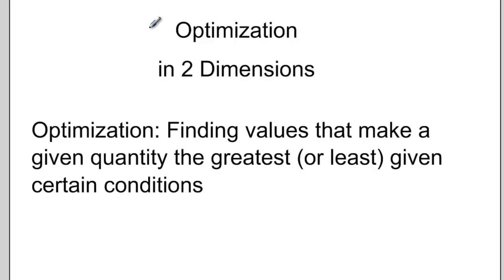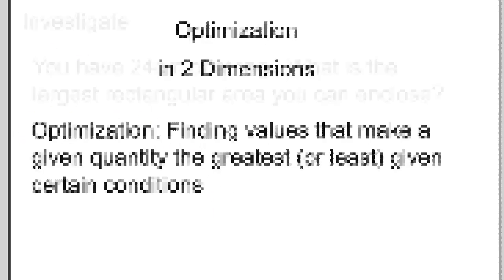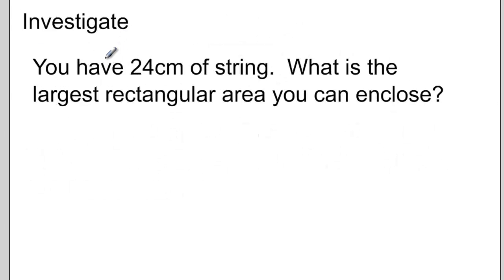In this video we'll be talking about optimizing shapes in two dimensions. Optimization means finding values that make a given quantity the greatest or sometimes the least given certain conditions. Let's try this investigation: you have 24 centimeters of string and we want to know what the largest rectangular area that we can enclose with the string is. I can imagine taking my string and arranging it into some sort of rectangle, and then calculating the area of that rectangle that I've made. But there's many different shapes of rectangles that I could make.